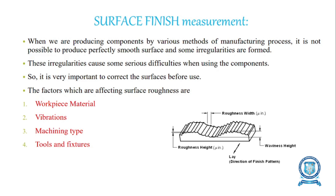These fine irregularities are called surface roughness. Both surface roughness and surface finish refer to the same concept, though the approach to determine the irregularities differs. It is very important to correct the surface before using the product. The factors affecting surface roughness are: workpiece material, vibration, machining type, and tools and fixtures.